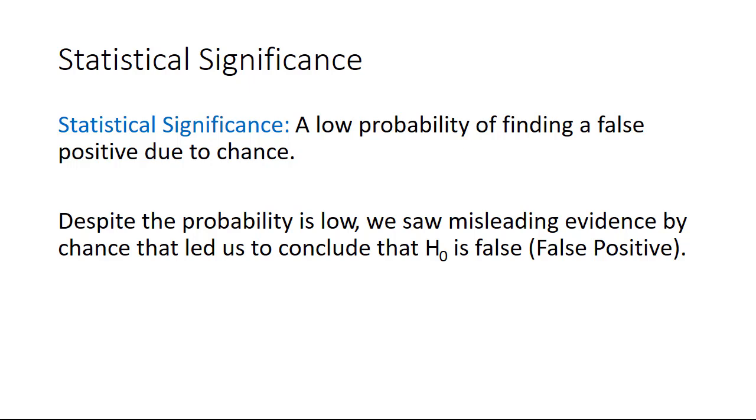And despite the probability being low, we saw misleading evidence by chance that led us to conclude that we could reject the null hypothesis. In other words, we got a false positive. We got a false positive that we could support the alternate hypothesis.